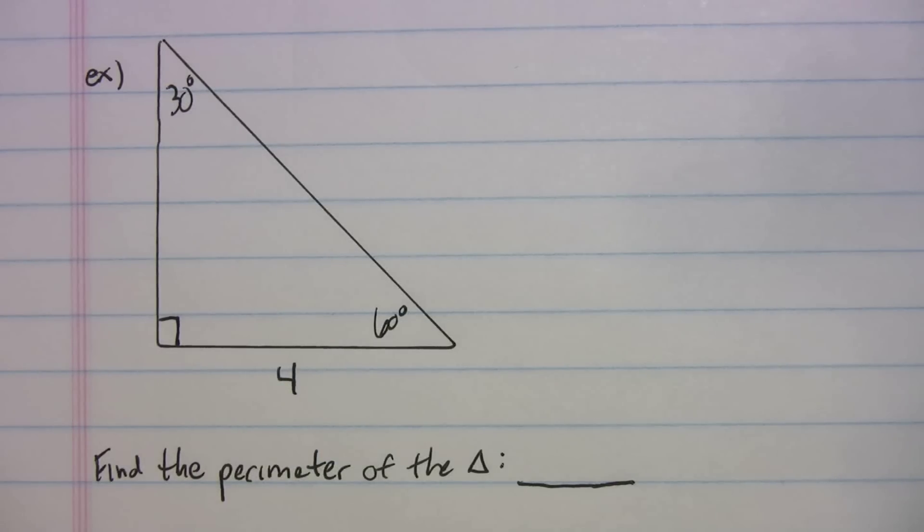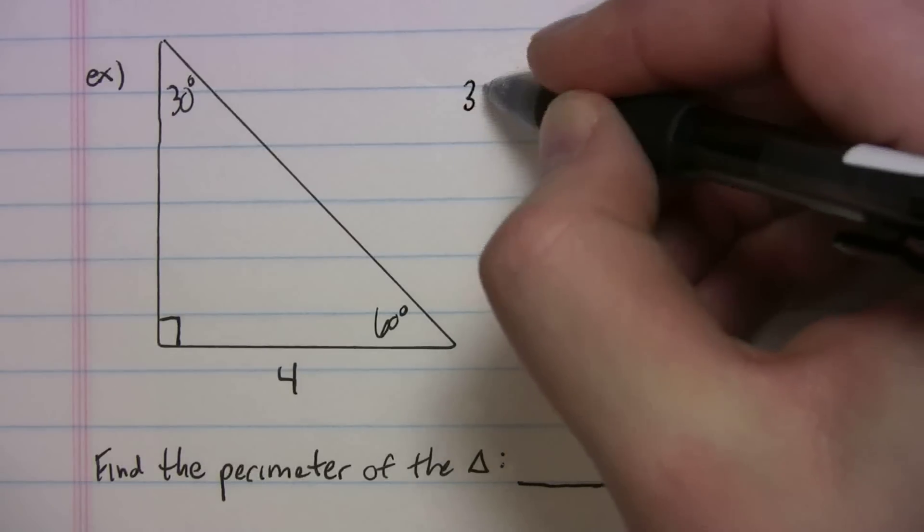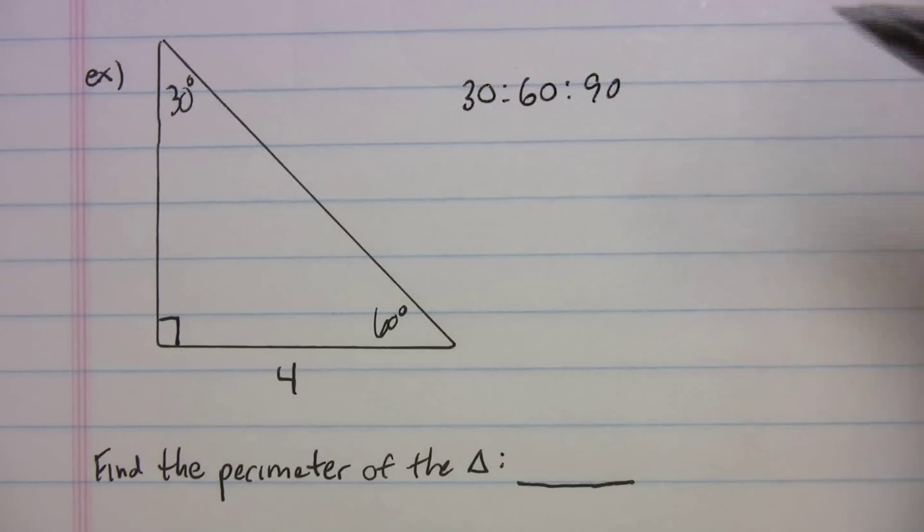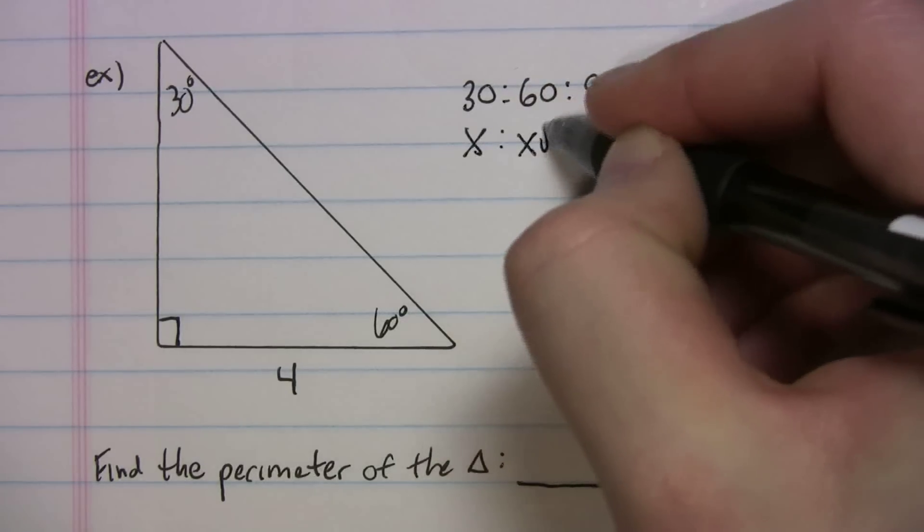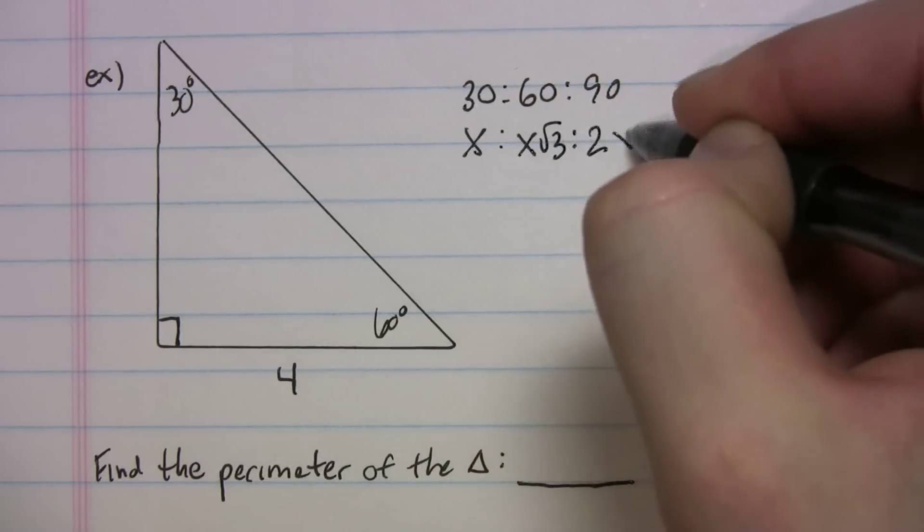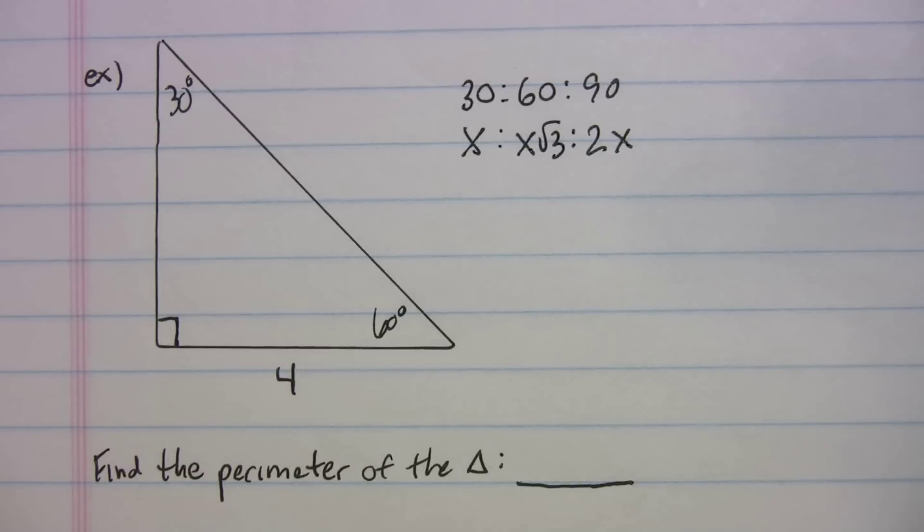Well, come test day, on your paper, really important, you're going to write 30-60-90. Under it, you're going to write x, x radical 3, 2x. This is a ratio of the sides, you've got to have this memorized.